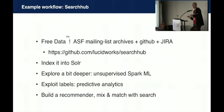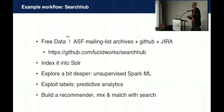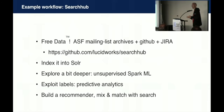Imagine you take this dataset - mailing list archives plus GitHub and JIRA tickets - and index them all into Solr. You see how ugly they look to start with because it's real data. Then you play with it: do some clustering, some graph analysis of the social network of people who follow the same issues in mailing lists and respond to the same GitHub and JIRA tickets. And then use this data as a recommender playground with minimal infrastructure.